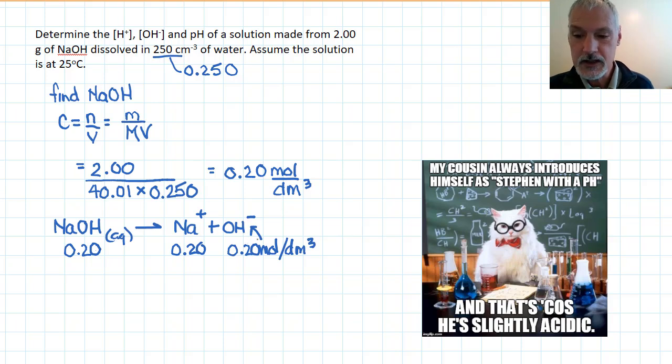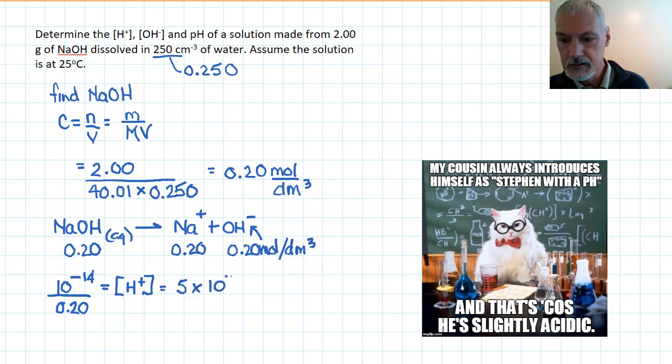Remember, that's all I need to determine the concentration of the H plus ion, because I know 10 to the minus 14 divided by the concentration of the hydroxide. That's going to give me the concentration of my acid particle. And that works out to 5 times 10 to the minus 14 moles per decimeter cubed.